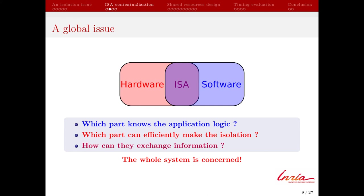Second, which part can efficiently make the isolation? Pure software countermeasures against Spectre attacks have shown that, without perfect control over the microarchitecture, software cannot achieve this due to the complexity of modern implementations. Modifying the ISA to manage all possible shared resources is not feasible due to their number — we cannot consider each possible FSM one by one. Moreover, shared resources are implementation-dependent, making this approach incompatible with abstraction and code portability. Therefore, making the isolation must be the hardware's role. Nevertheless, the ISA has another role to play by allowing security exchanges between hardware and software, enabling a beneficial compromise.